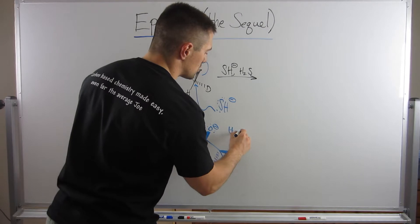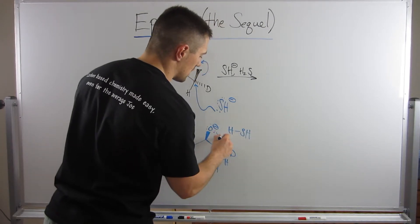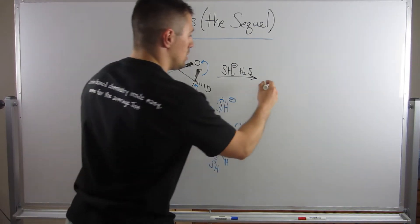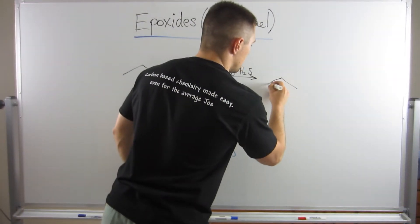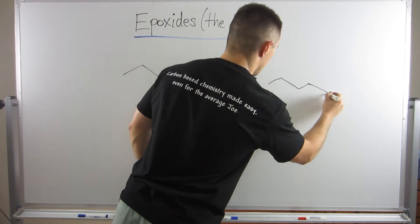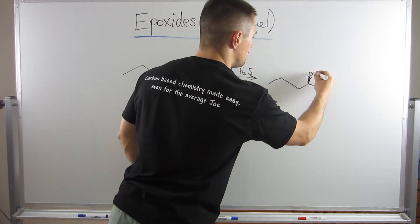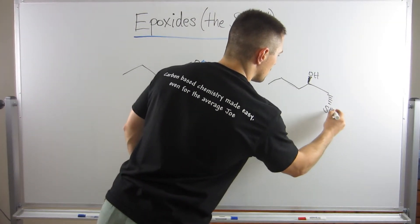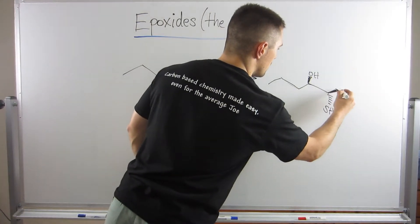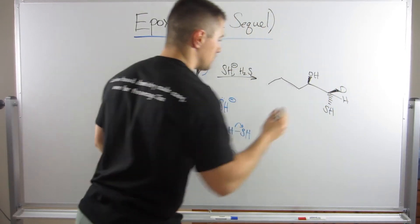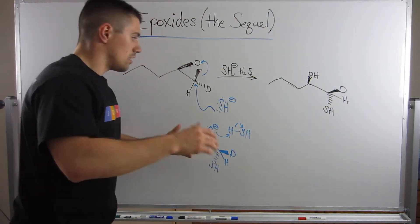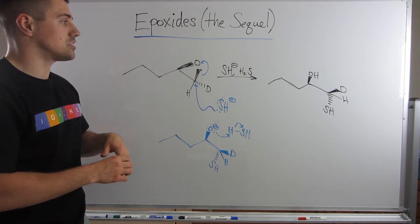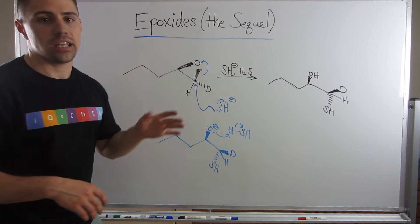And then all we need is the H2S will just form as a way to quench this negative charge. So, if we want to, in black, draw our final product, we have the wedged OH up here. We have the dash SH down here, deuterium, as well as the hydrogen. Okay. So, just wanted to point that out. We saw that before, but I just wanted to make sure we saw this in the context of a straight chain and not on a ring.